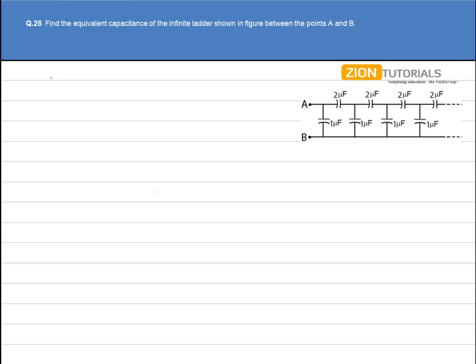So here we take an assumption. The assumption is that a single set of capacitors will not alter the C equivalent, that is, C equivalent will not be changed by a single set of 1 microfarad and 2 microfarad capacitor.